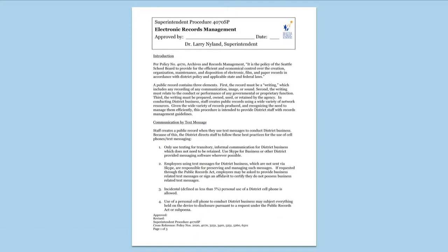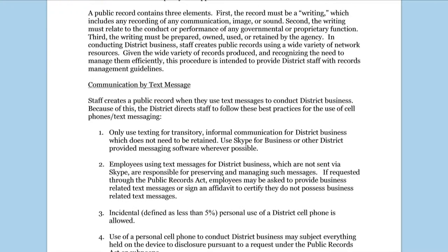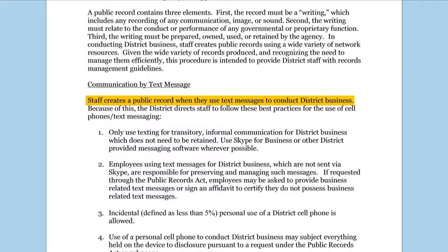Superintendent Procedure 4070SP, Electronic Records Management, outlines what you need to know. You create a public record when you use text messages to conduct district business. This means the device is discoverable and, if needed, the messages would have to be available for district review.